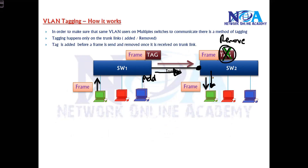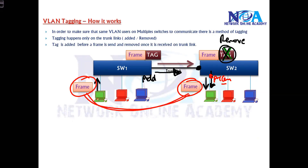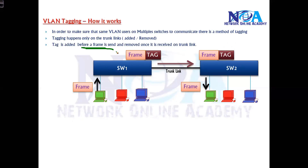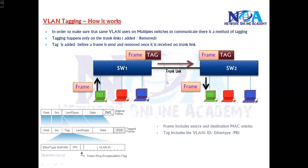When the packet leaves the access port and is sent to the end device, it is a normal frame — the same frame format. The tag is added when sending on the trunk link, and once received it is removed. Tagging happens only on the trunk link. The access links are not aware of the tagging process; they don't even know that multiple VLANs are running in the network, because they just identify based on source and destination MAC addresses.